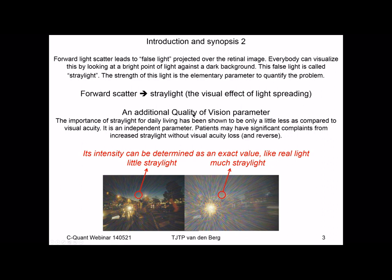Stray light serves as an additional quality of vision parameter. In ophthalmology and optometry, visual acuity is the most important parameter, but stray light is second in importance. In some cases, it is the most important problem for your patient. Stray light, as compared to visual acuity, is an independent parameter. You can have patients with significant complaints from stray light without having visual acuity loss, but the reverse can also be the case. The intensity can be determined as an exact value, like real light, but it is a visual phenomenon — it is a functional measure.